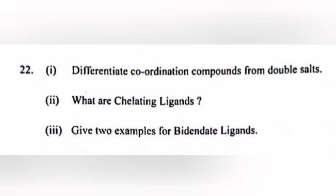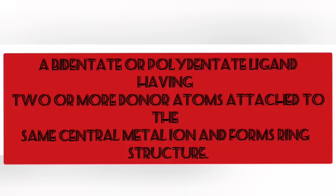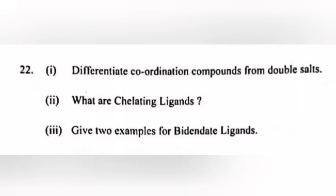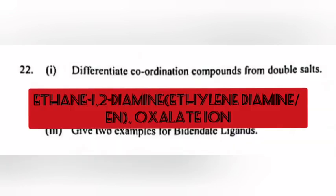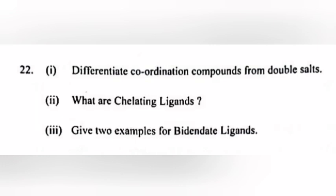Part 2: What are chelate ligands? Answer: A bidentate or polydentate ligand having two or more donor atoms attached to the same central metal ion and forms ring structure. Part 3: Give two examples for bidentate ligands. Answer: Ethane-1,2-diamine or ethylenediamine, oxalate ion, or write any two examples.